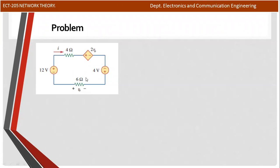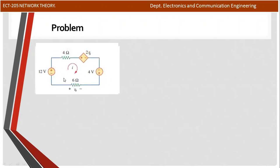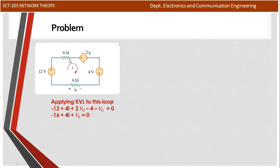The first step is KVL. We apply KVL — Kirchhoff's Voltage Law — around the loop. The current direction is set for KVL. The voltage is identified for the KVL equation.